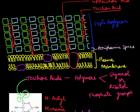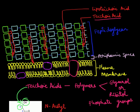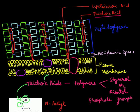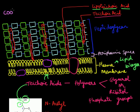Teichoic acid may also be attached to the plasma membrane itself, in which case it is called a lipoteichoic acid. Since the plasma membrane is a lipid bilayer, a teichoic acid attached to it is called a lipoteichoic acid. Teichoic acids have COO minus groups, and it is because of these COO minus groups that the Gram positive bacterial cell wall has a negative charge.